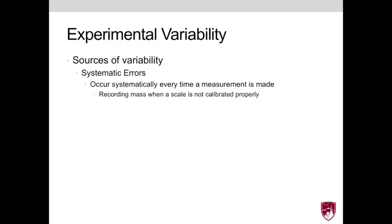Within this lab, there are three primary sources of variability or uncertainty that we will encounter. And the first is a systematic error, which occurs repeatedly every single time a measurement is made. And this usually occurs because of a miscalibration of a device.